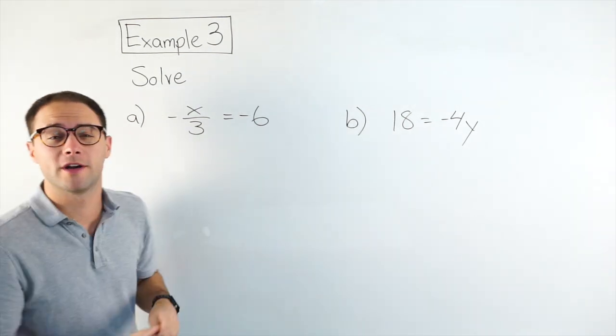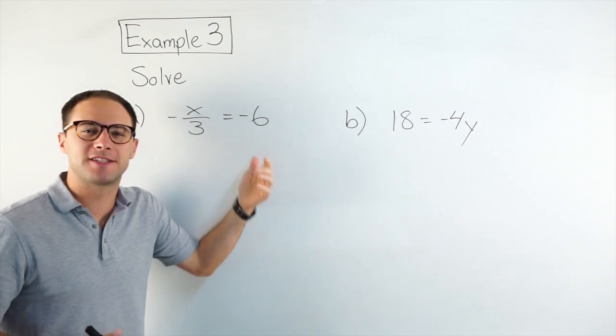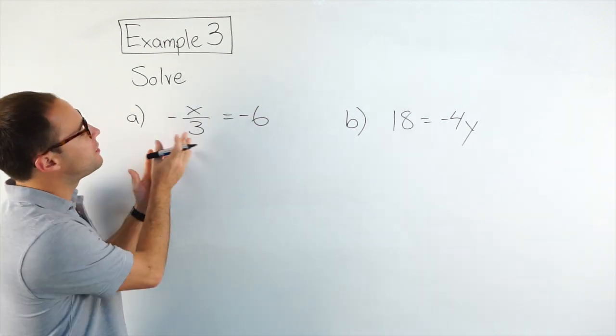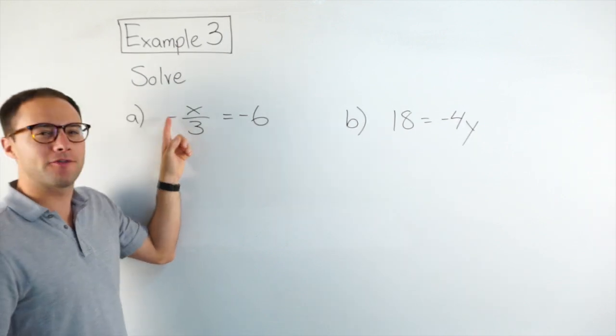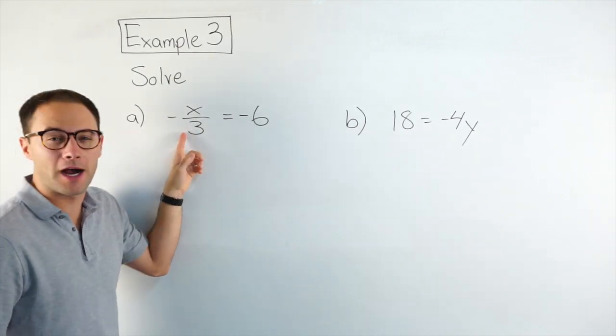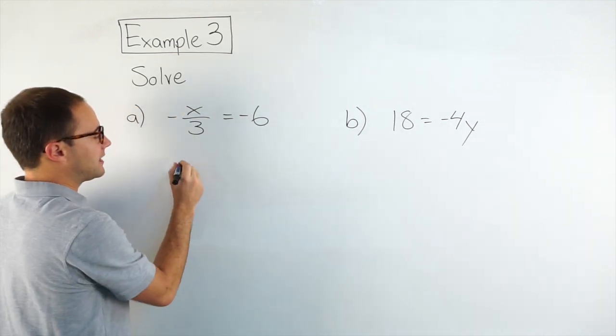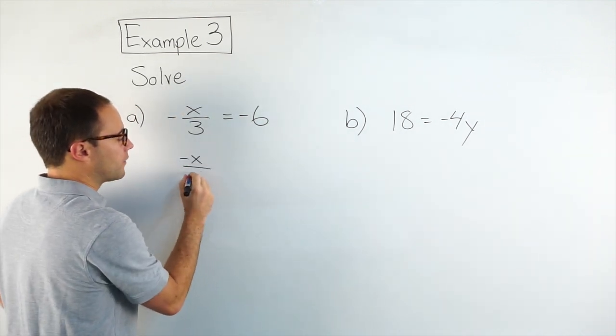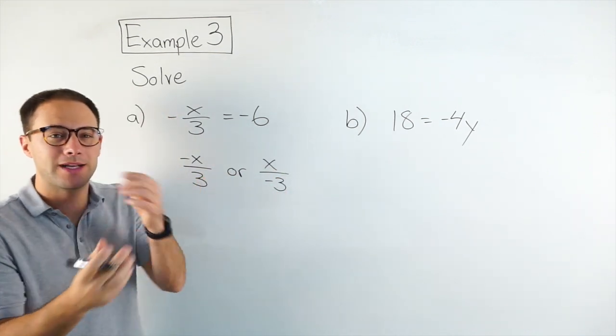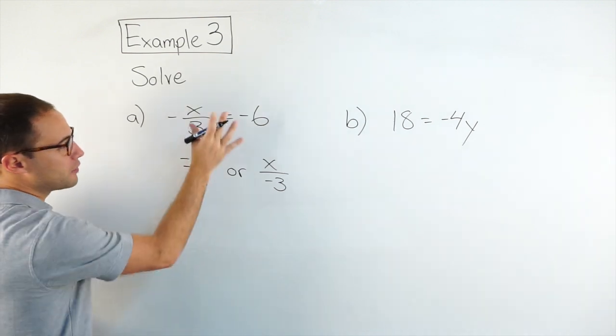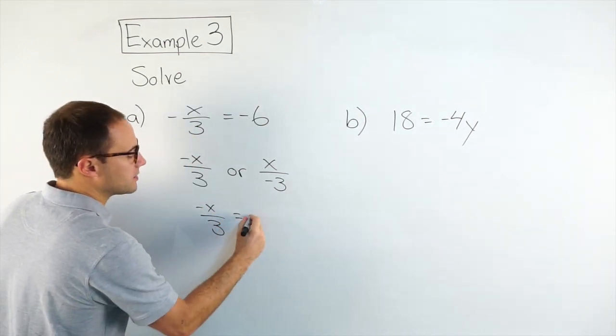Okay, example three. We've got a couple more equations to solve. Let's get after it. Negative x over three equals negative six. Now, with this, when they write the negative in front, it's hard to tell, well, is that negative on the x, the numerator, or is it on the denominator? And the truth is, it doesn't matter. I could write this as a negative x over three or x over negative three. When I solve it, I would get the same thing, and I can prove it to you real quick.